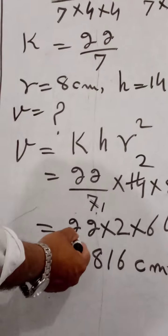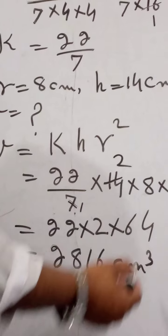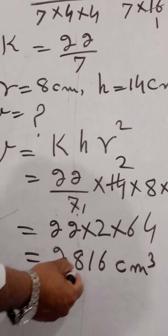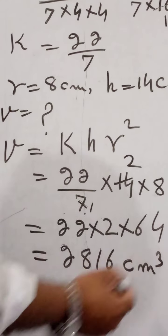By multiplication, 22 into 2 into 64, we find 2816 cm cube,